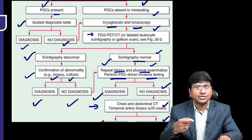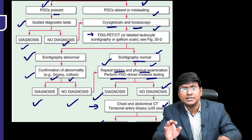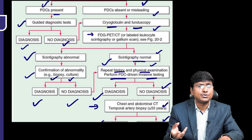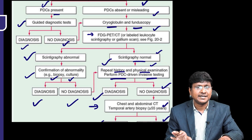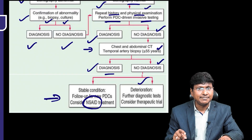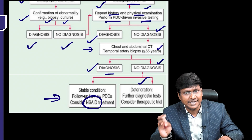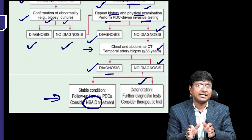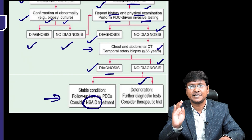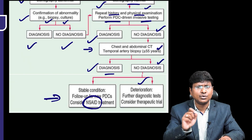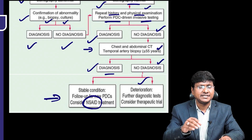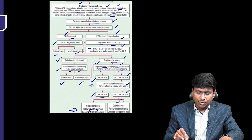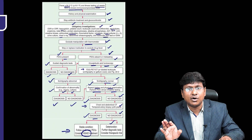If scintigraphy is normal, repeat the history and examination and consider pathological diagnostic clue driven invasive testing. If the patient's age is more than or equal to 55 years, perform chest and abdominal CT and temporal artery biopsy to rule out giant cell arthritis. If the patient remains stable, follow up for new pathological diagnostic clues and consider NSI treatment. If the patient deteriorates, perform further diagnostic tests or consider a therapeutic trial. The important takeaway: FUO requires stepwise evaluation with history, blood tests, imaging, and biopsy. Pathological diagnostic clues play a crucial role in guiding diagnosis. FDG PET CT and biopsy are essential in unexplained cases, and management includes follow-up or empirical treatment if no diagnosis is reached.